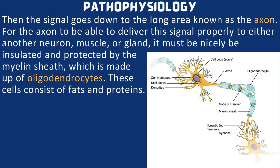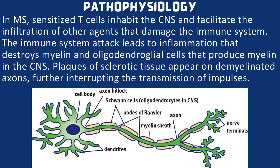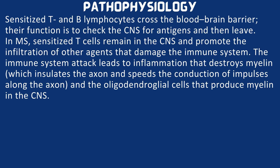These cells consist of fats and proteins. In multiple sclerosis, sensitized T cells inhabit the CNS and facilitate the infiltration of other agents that damage the immune system. The immune system attack leads to inflammation that destroys myelin and oligodendroglial cells that produce myelin in the CNS. Breaks of sclerotic tissue appear on demyelinated axons further interrupting the transmission of impulses. Normally, sensitized T and B lymphocytes cross the blood-brain barrier to check the CNS for antigens and then leave. In multiple sclerosis, sensitized T cells remain in the CNS and promote the infiltration of other agents that can damage the immune system.